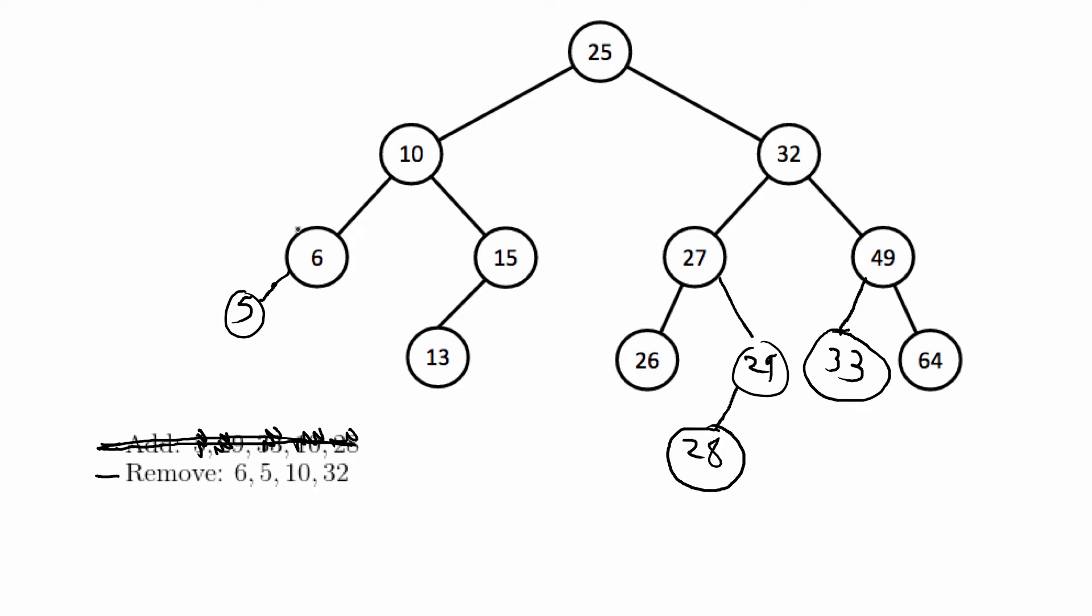To remove 6 that has one child node only, so we would just remove 6 and bump up the child leaf node and we're done with that.